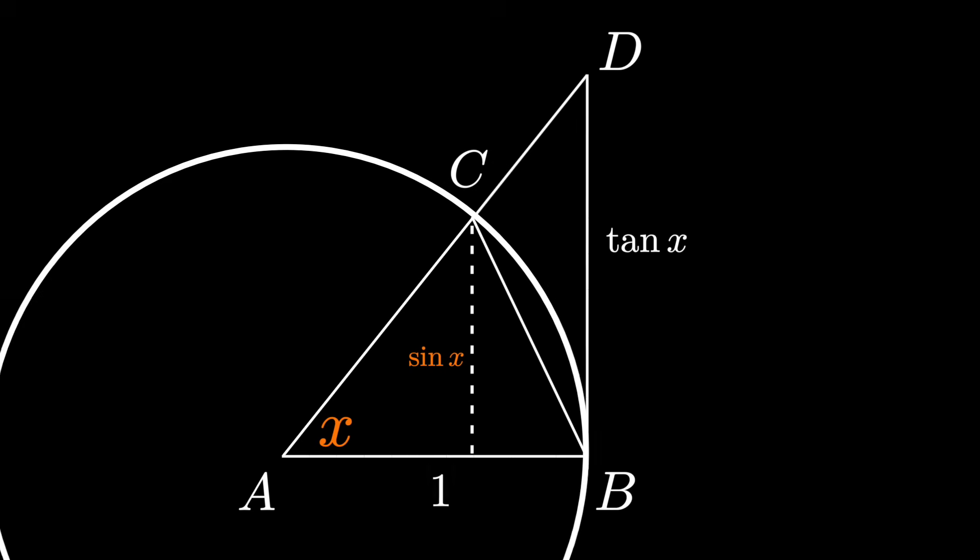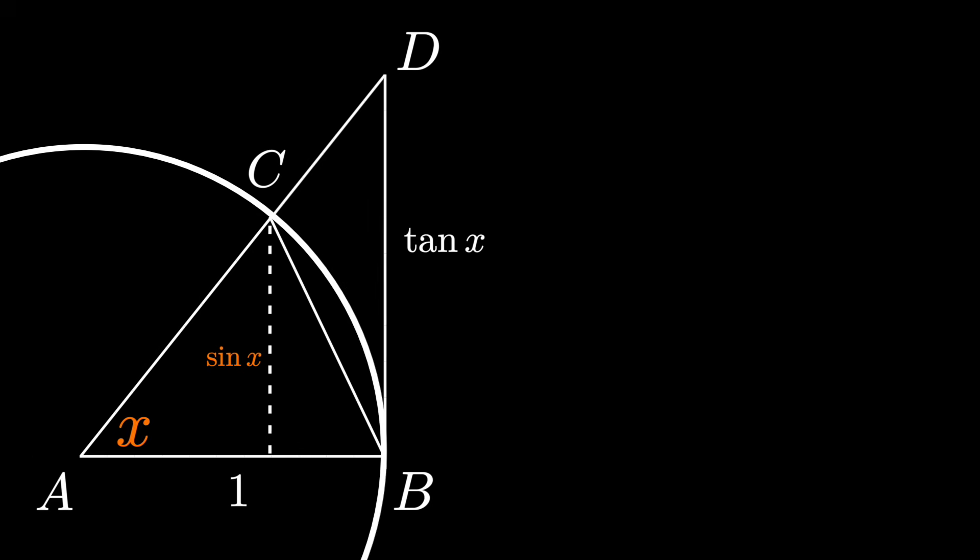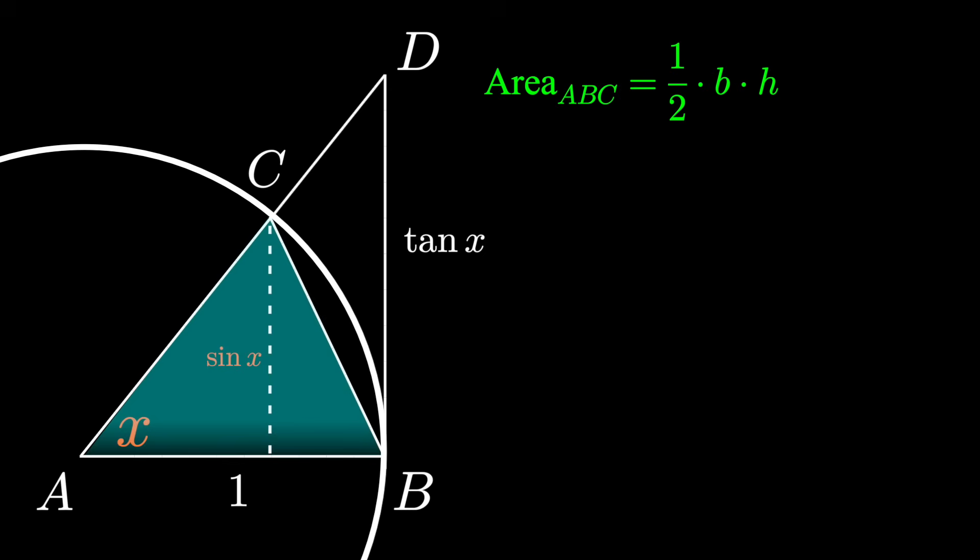So what's the area of triangle ABC? The area of a triangle is ½ base times height. The base is 1, the height is sin X, so it's ½ times sin X. What's the area of this shaded wedge? Since it's the area of a sector of a circle, we can just use the formula for the area of a sector. Here the angle is X, the radius is 1, so it's just ½ times 1 squared or ½X.